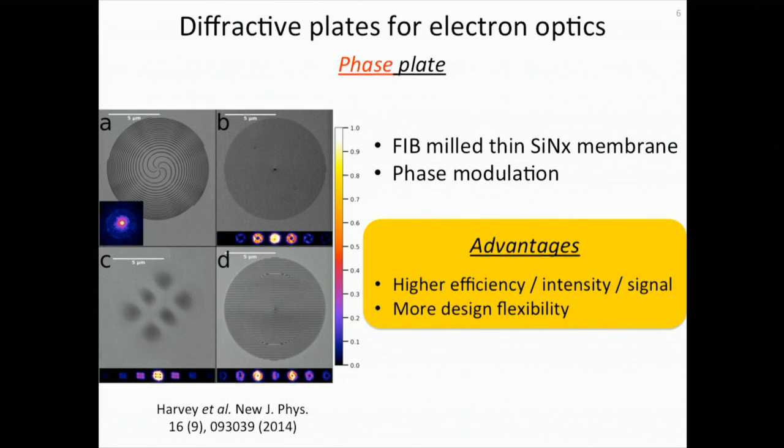Recently, people are more interested in a phase plate, which, according to its name, imposes a phase modulation instead of an amplitude modulation to the incoming electron beam. This slide shows some examples of phase plates made by silicon nitride membrane milled by focused ion beam. There are some advantages of phase plates compared to amplitude plates. First, because all the electrons can transmit through the phase plates, it will give a higher efficiency, with higher intensity and more signal-to-noise ratio in a diffracted beam. Also, the phase plate has more design flexibility, because for an amplitude plate, it either blocks the electron beam or transmits the electron beam. But for a phase plate, we can impose an arbitrary phase shift from 0 to 2π to the incoming electron beam.